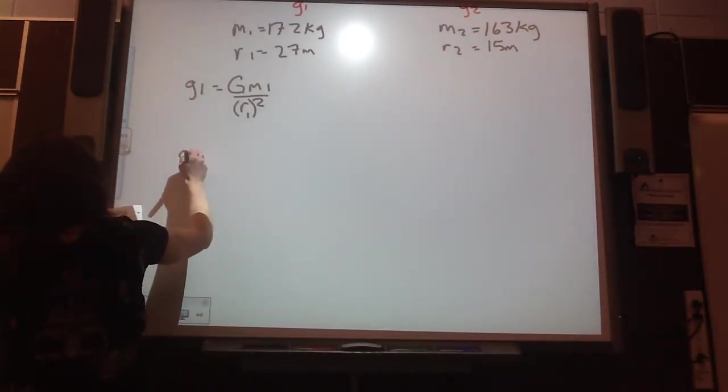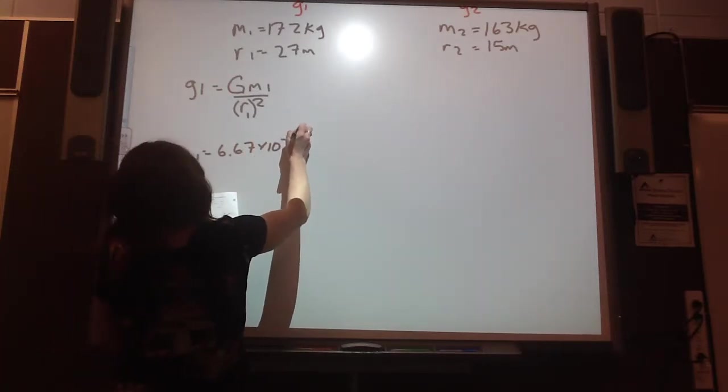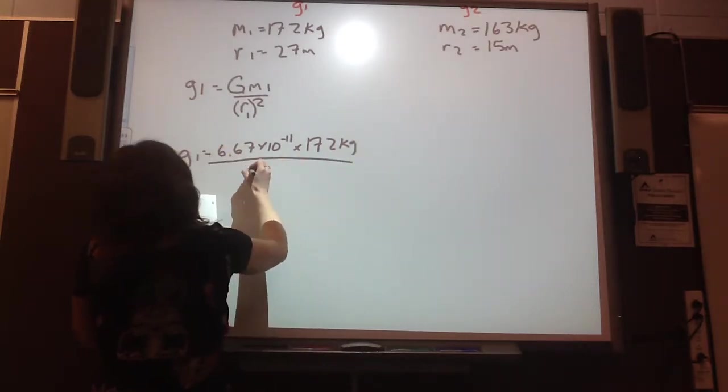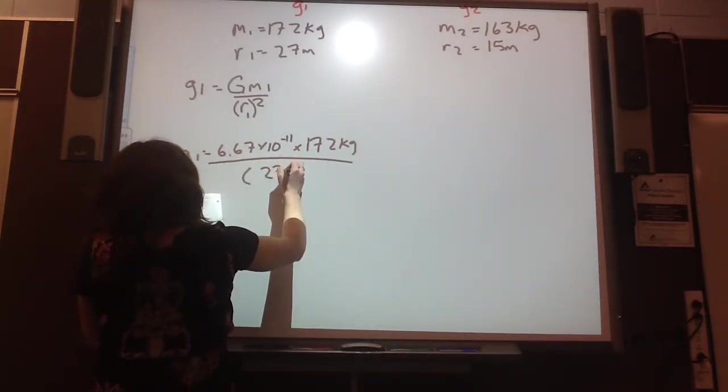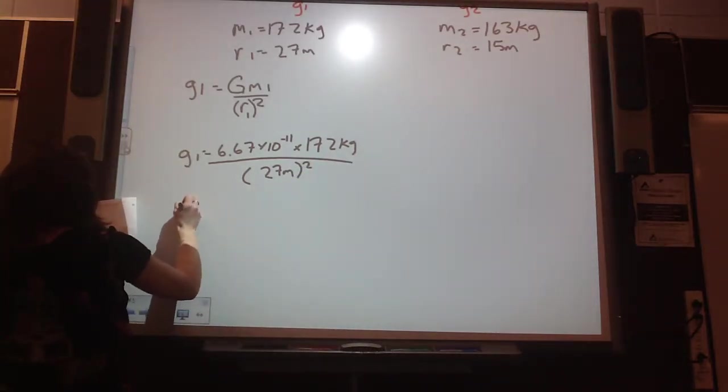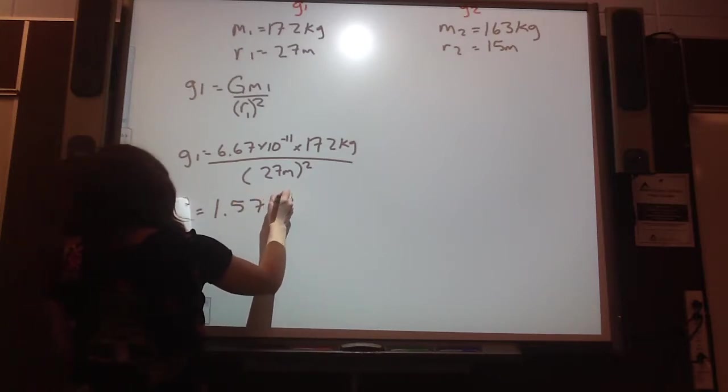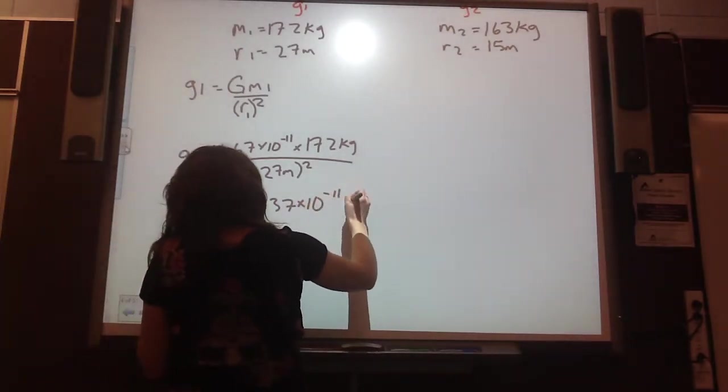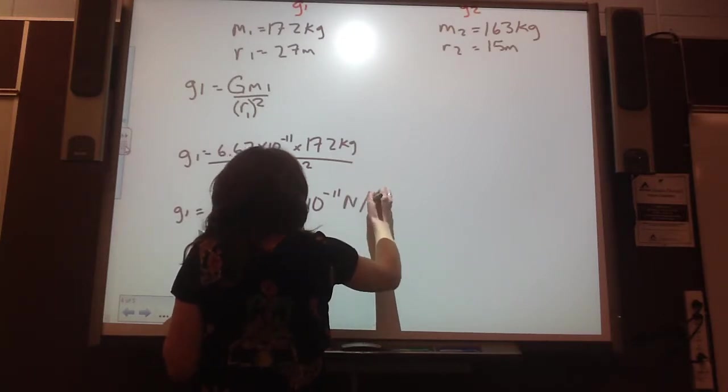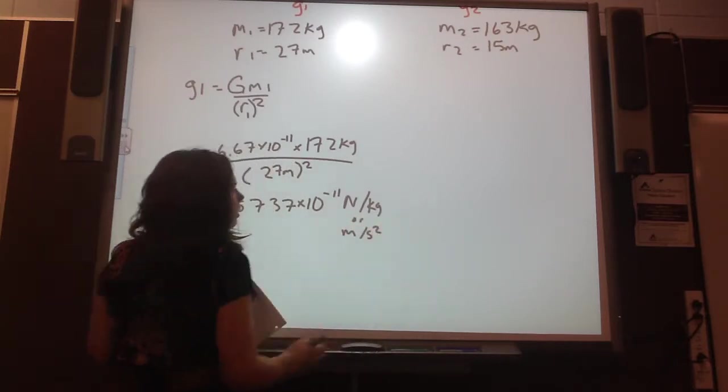So now G1 is 6.67 times 10 to the negative 11 times 172 kilograms, all divided by 27 meters squared. So G1 is 1.57 times 10 to the negative 11 newtons per kilogram or meters per second squared, either one.